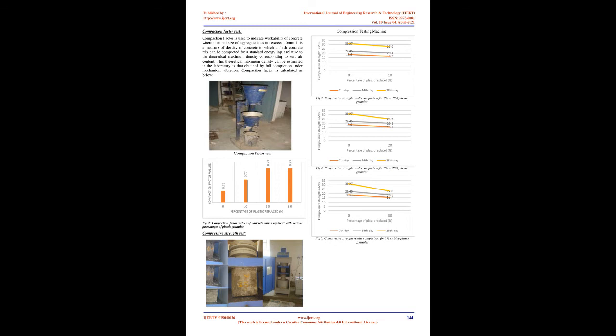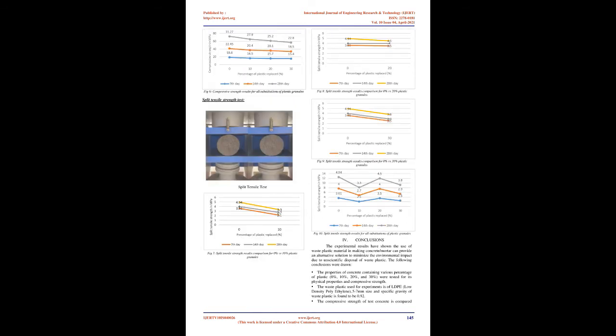Generally, fine aggregate is passed through a 4.75 mm sieve. 3. Coarse Aggregate: Coarse aggregate is another fundamental raw material which gives strength, hardness, and increases the volume of the concrete. Here, coarse aggregate of size 20 mm and angular crushed shape is chosen.